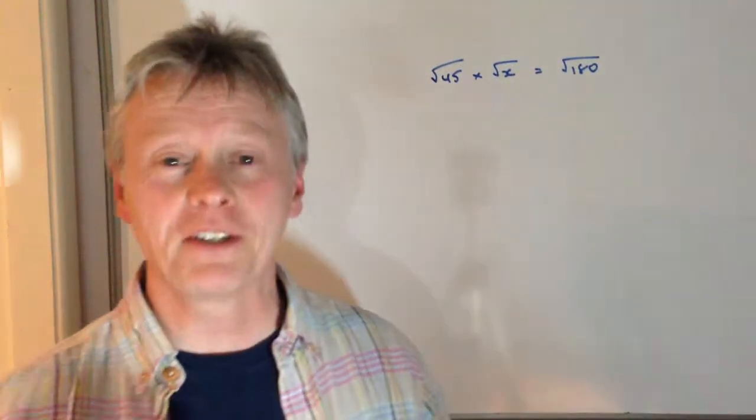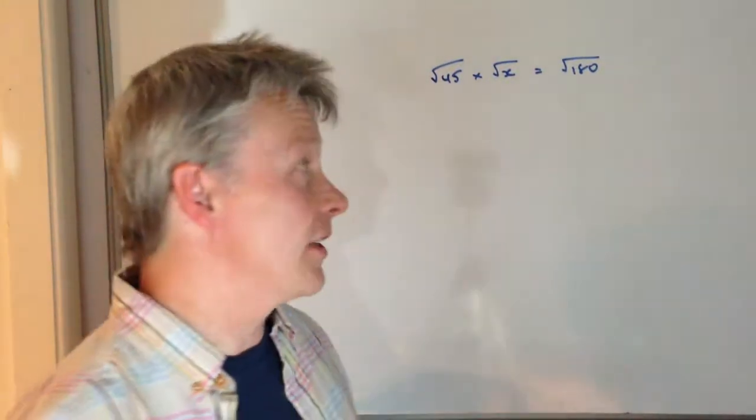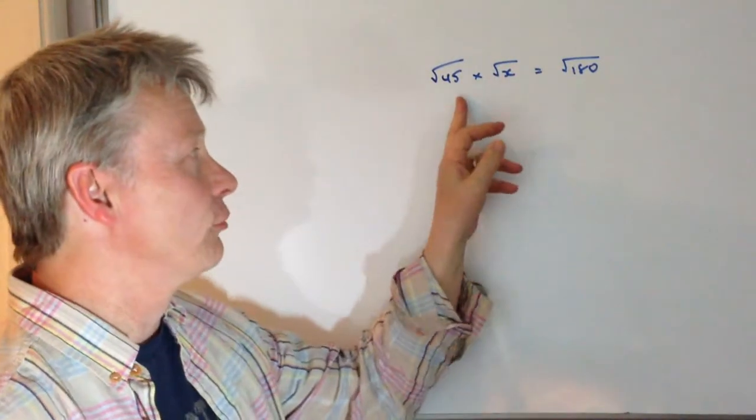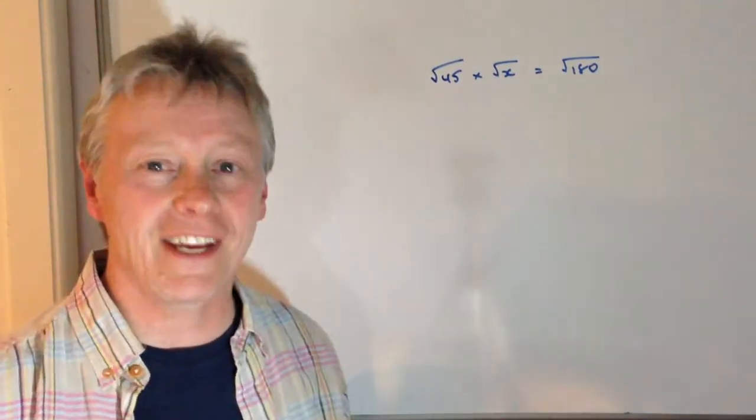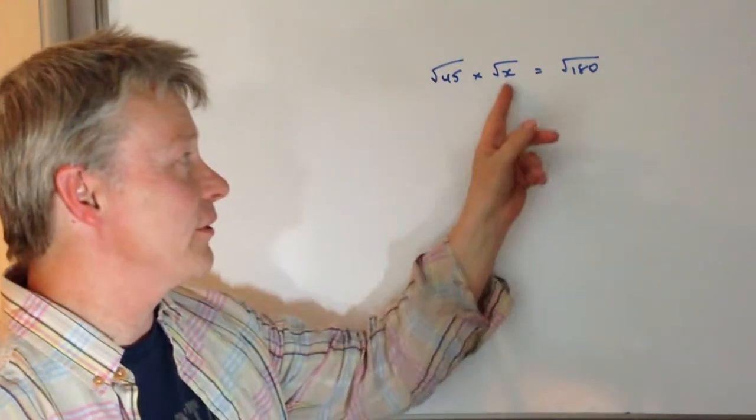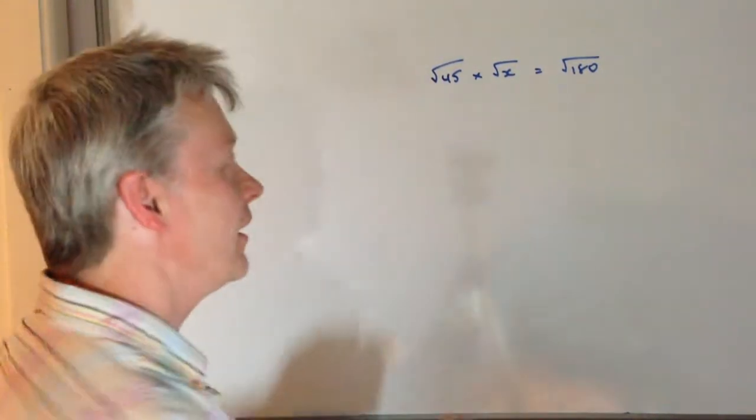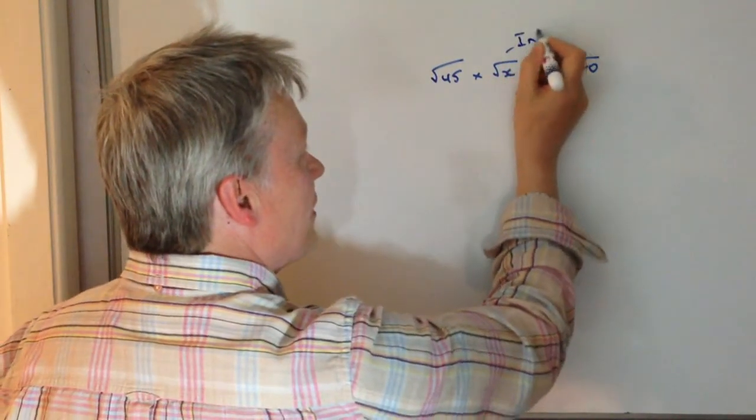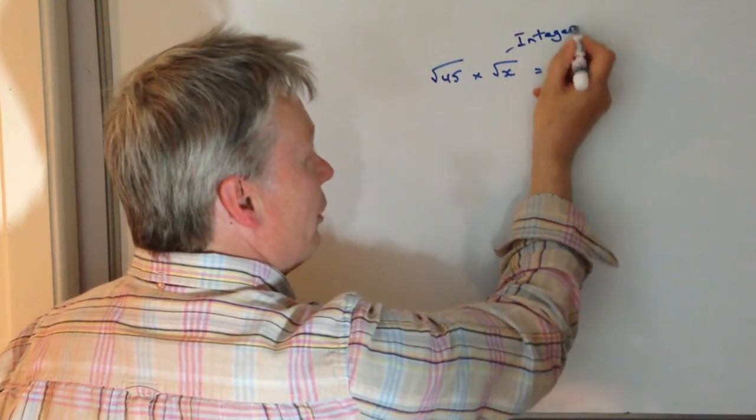Hi, in this particular playlist we're going to be continuing to look at surds. So in this question we've got root 45 times root x equals root 180, and they want us to find the value of x, which they tell us is actually an integer, which basically means a whole number.